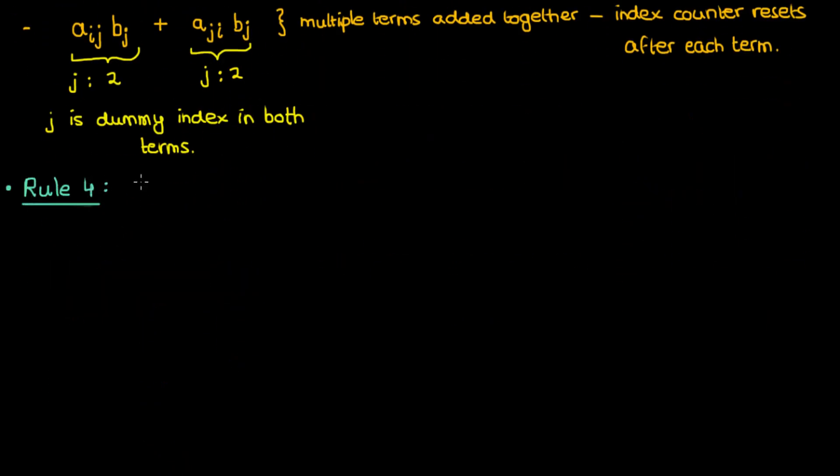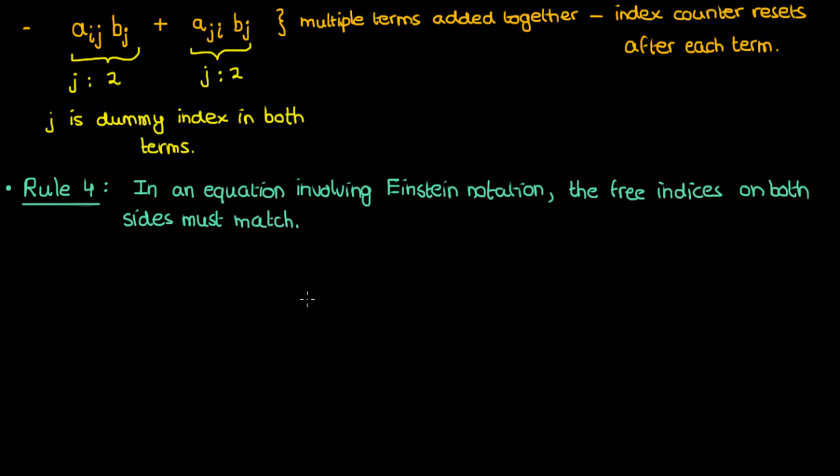The fourth rule of Einstein notation is that when you have an equation involving terms in Einstein notation, the free indices on the left must match the free indices on the right. Again, just to remind you, free indices are indices that only occur once in a given term. So according to this rule, an equation like x sub i equals a sub ij times b sub j is fine, because on the right hand side your only free index is i, and on the left your only free index is also i. Remember, a free index only occurs once.